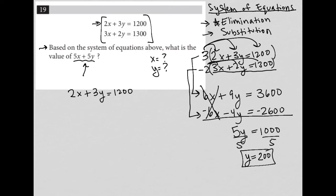Now that I know y is 200, I can substitute that number in for y. So I have 2x plus 3 times 200 equals 1,200, which means 2x plus 600 equals 1,200.